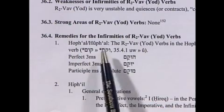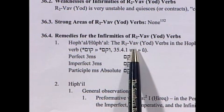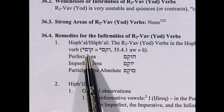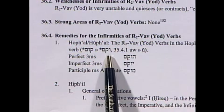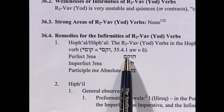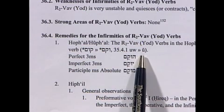The first form to examine is the Hofal in section four of Chapter 36. The Hofal here is really a Hufal. The R2 Vav-Yod is going to act as if it were an original R1 Vav or R1 Yod. So instead of being an R2 Vav, we're really changing it to an R1 Vav, and therefore we have the same situation as in the R1 Vav-Yod: namely the contraction of UW becoming a long shureq.